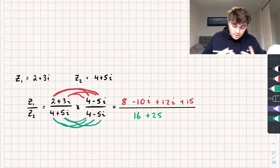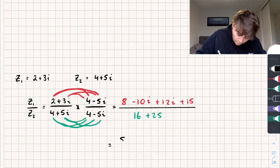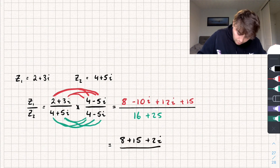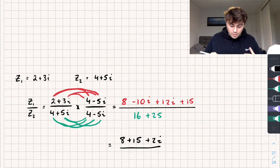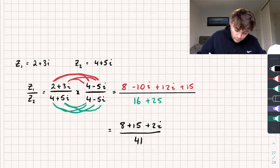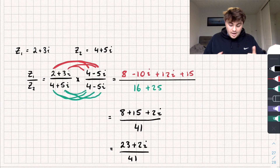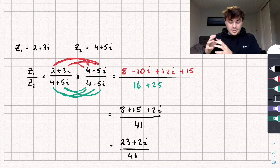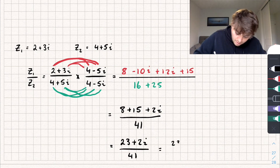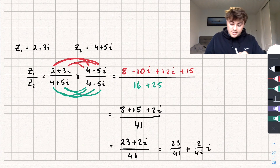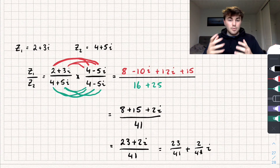Simplifying the top: 8 plus 15 is 23, and negative 10i plus 12i is plus 2i, so the numerator is 23 plus 2i. The denominator is 16 plus 25, which is 41. So we get 23 plus 2i over 41, which we can express as 23 over 41 plus 2 over 41 times i. We've removed the imaginary part from the denominator and simplified the result.